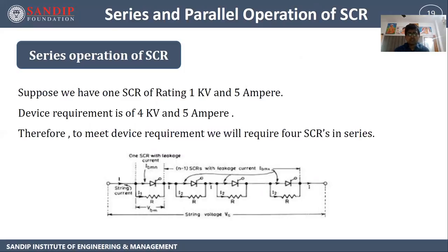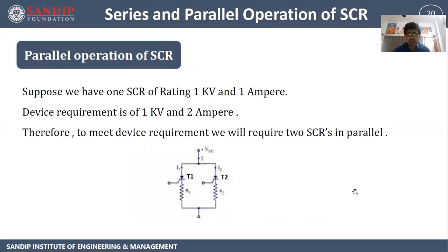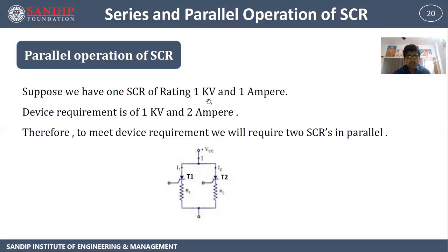Series operation: suppose one SCR operates at 1 kV and 5 A, but the device requirement is 4 kV and 5 A. Current is the same but higher voltage is needed, so we connect 4 SCRs in series. Each SCR provides 1 kV, giving a total of 4 kV, while current remains the same at 5 A. Parallel operation: suppose one SCR operates at 1 kV and 1 A, but the requirement is 1 kV and 2 A. Current requirement is higher while voltage is the same, so we connect two SCRs in parallel — each provides 1 A for a total of 2 A.